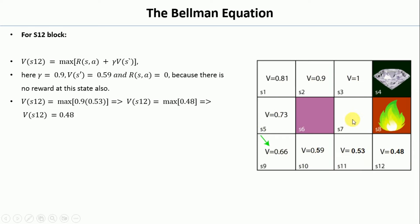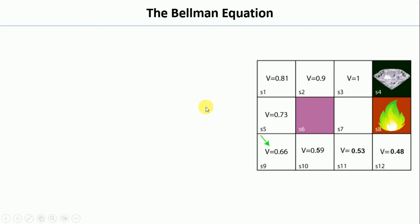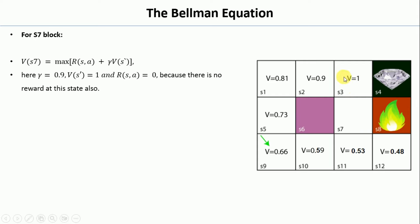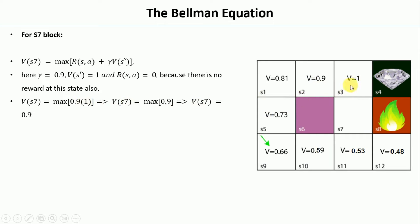Now we have one more cell, S7. I cannot go left or right from S7 — the right side is fire. If I go down, the previous state value is 0.53, but if I consider S3 as the previous state, its value is 1, which is the maximum. So for S7, R_SA is 0, and the previous state value is 1. Therefore 0.9 * 1 = 0.9, so V(S7) = 0.9.